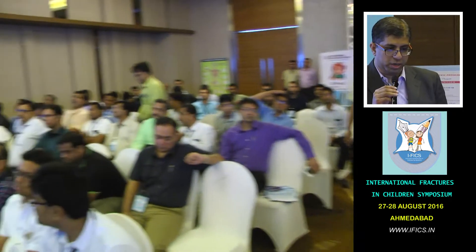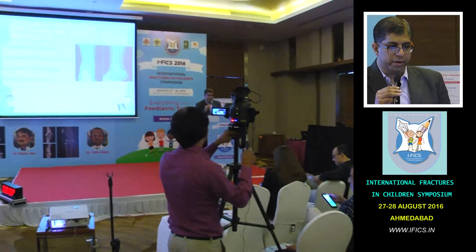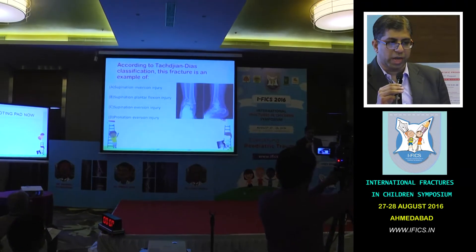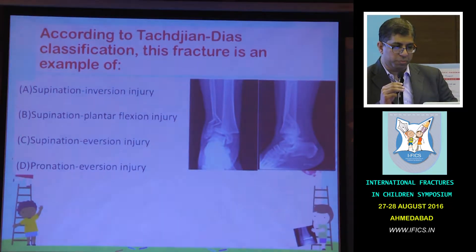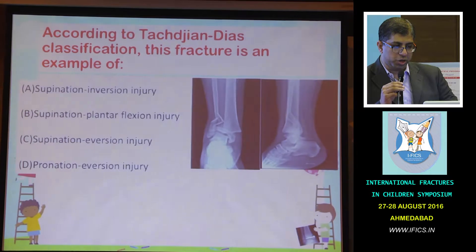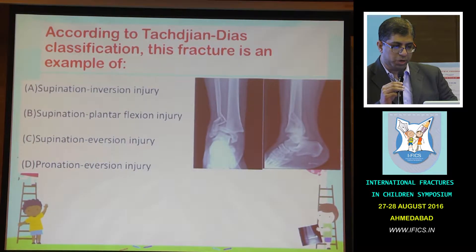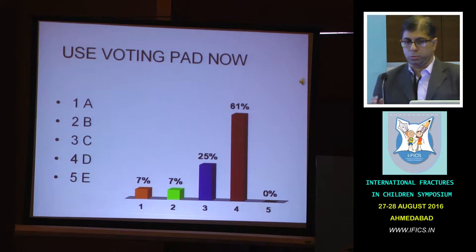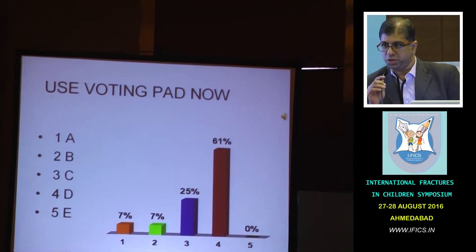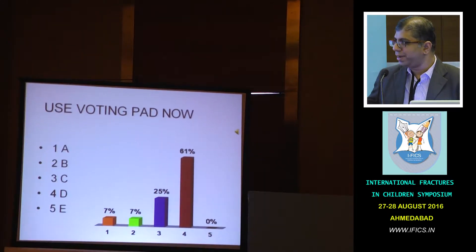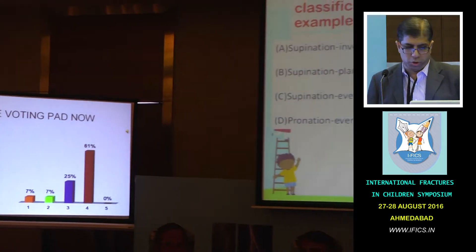We will go to the cases and take an ARS. Fracture in a 12-year-old kid, and according to the Tagchan Dias classification, this fracture is: A) supination inversion, B) supination plantar flexion, C) supination eversion, D) pronation eversion. Your voting starts now. The overwhelming majority is saying D, pronation eversion. Tushar, you gave a good talk on that — could you quickly explain why this is pronation eversion?